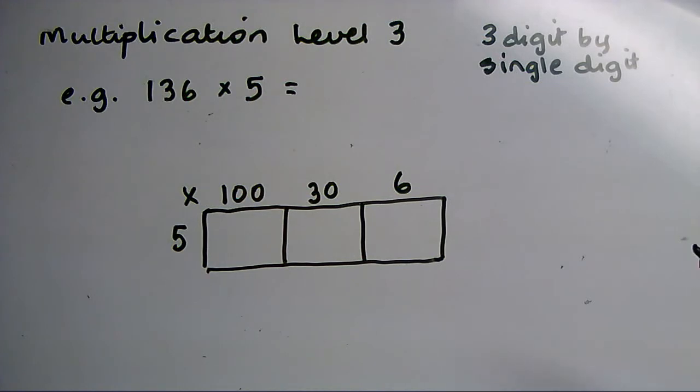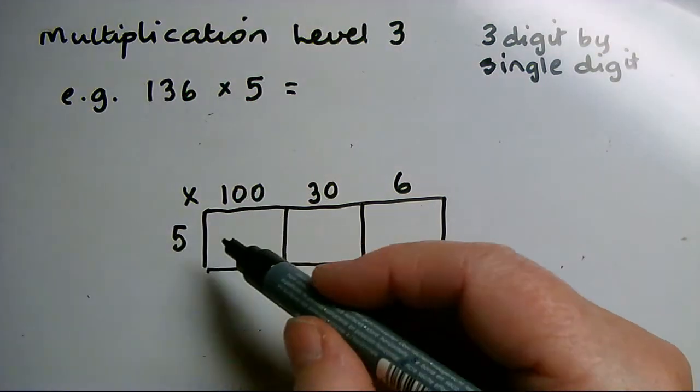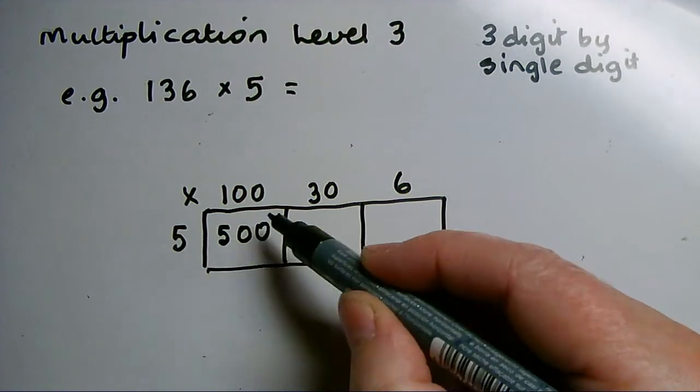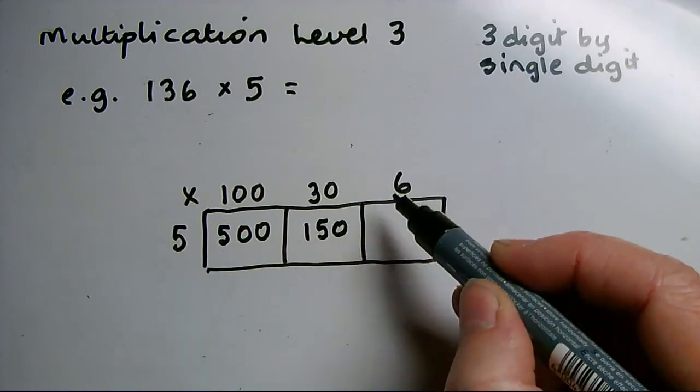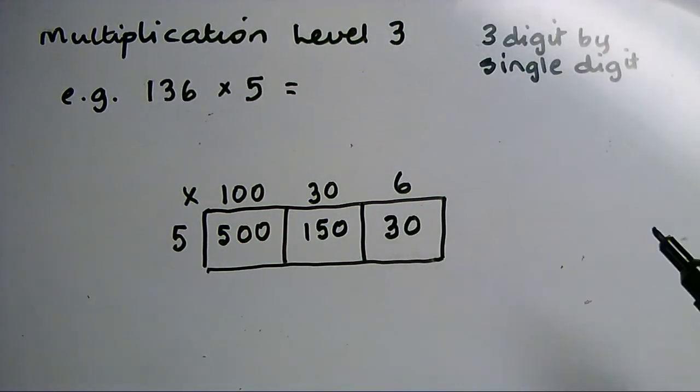Then I multiply each box in turn, what's at the side of the box by what's at the top of the box. 5 times 100 is 500, 5 times 30 is 150, 5 times 6 is 30.